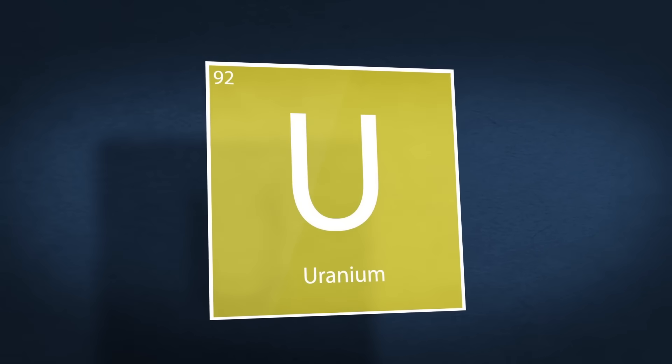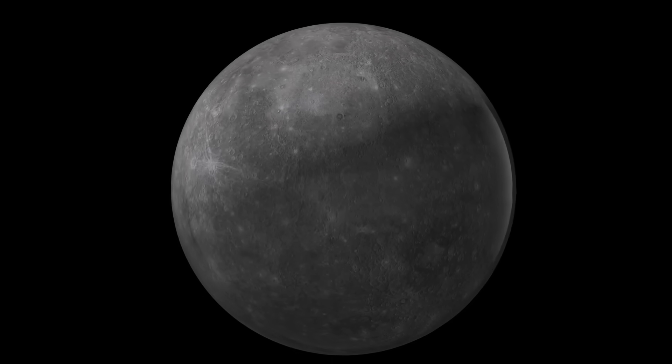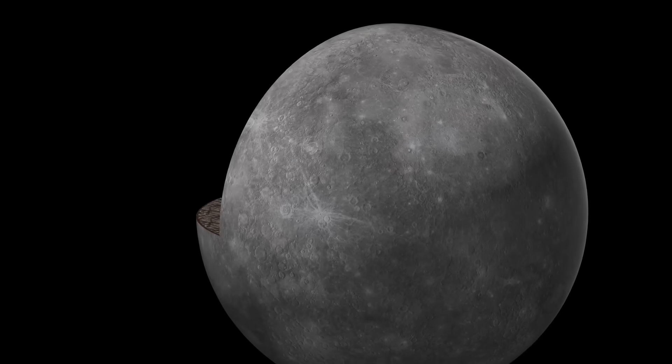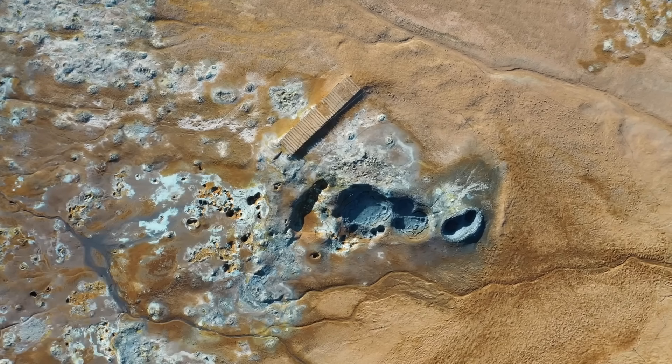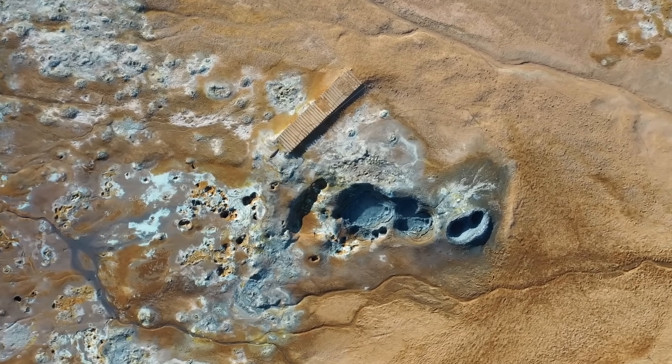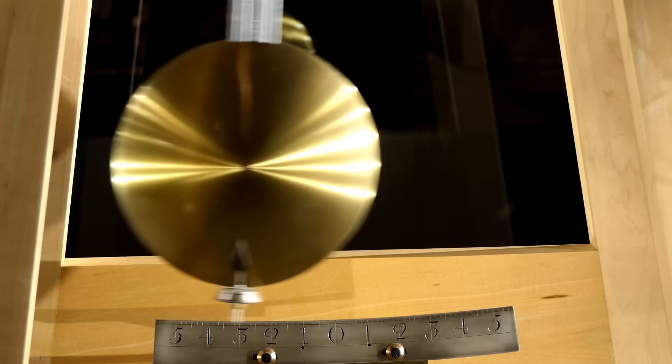Voyager was never meant to travel this far. It was never supposed to leave the solar system, never designed to confront the limits of dimensional stability or the possibility of artificial structures in interstellar space. And yet here it is, still transmitting, still revealing, still challenging the foundations of modern science.